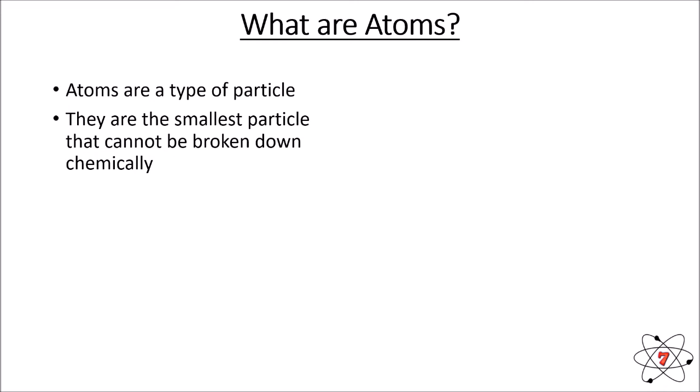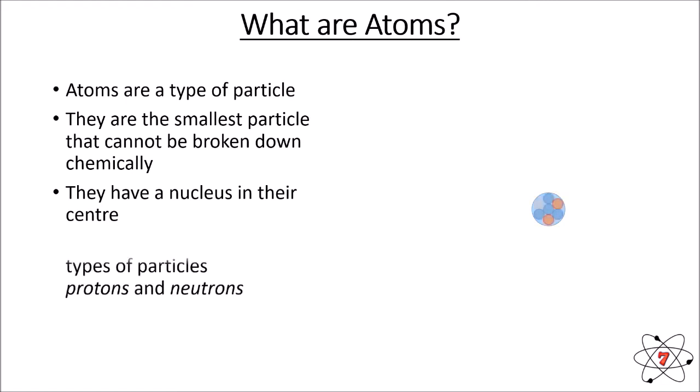We can break atoms down into something slightly smaller, but not with a chemical reaction. At the centre of an atom, we've got the nucleus. And inside the nucleus, we've got two types of subatomic particles. These are called protons and neutrons. When we say subatomic, we mean smaller than an atom, so anything subatomic is smaller than an atom.